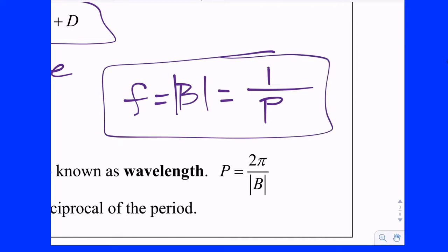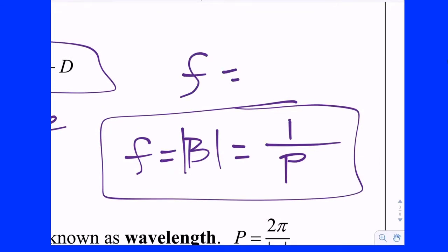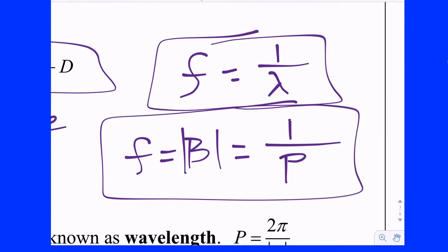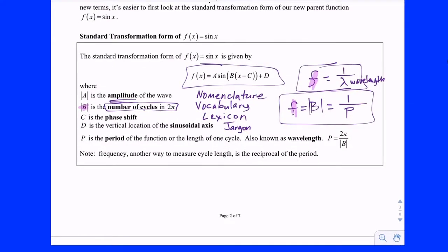The period is the length of one cycle — you measure how long it takes to make one full cycle. The frequency says: in a predetermined amount of time, how many full cycles do I have? So the period and frequency are reciprocals: F equals 1 over lambda, where lambda is the wavelength. We mathematicians use P for period instead of lambda, but they're the same. We'll stop right there and pick up with what C is tomorrow. So we've got amplitude, period, and number of cycles in 2pi for our sinusoidal graph. Then we'll start sketching them, and in the next section we start applying them.